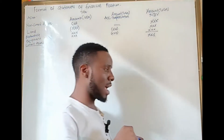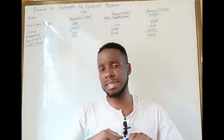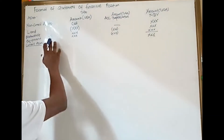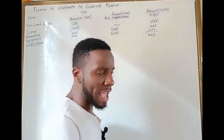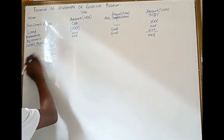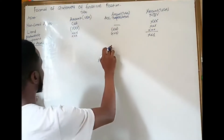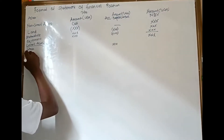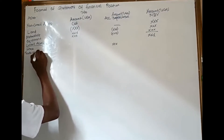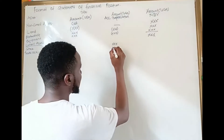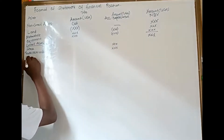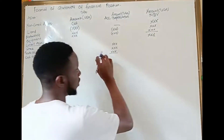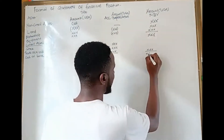Current assets are resources of the business whose usage does not go beyond one accounting year — they are used for less than one year. Under current assets we can have stock, trade receivables (sometimes called debtors), cash at bank, and so on. We bring them in the amount column and then total them up to get total current assets.